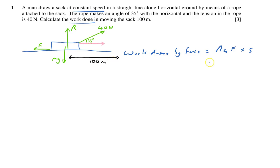So the work done by force is the pink bit, which is 40 cos 35, and I need to times that by the distance, that's 100. Importantly it says it's constant speed, and therefore the kinetic energy isn't increasing, and there's no work done to increase the kinetic energy.